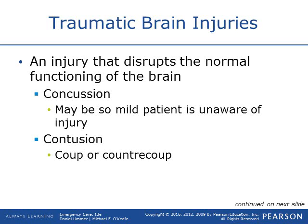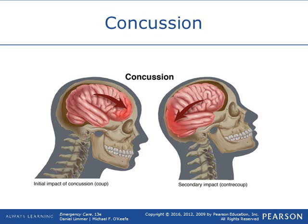A traumatic brain injury is an injury that disrupts normal functioning of the brain. That can be a concussion — so mild the patient may be unaware they're not acting normal. A contusion comes from coup or contrecoup injuries. The coup is the frontal blow where the brain slams forward into the skull, and contrecoup is the brain going backward. In a whiplash accident there could be both a coup and contrecoup injury.